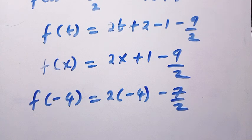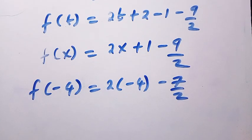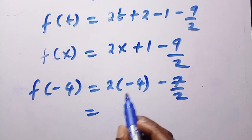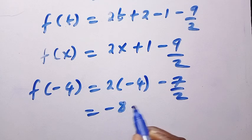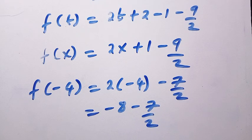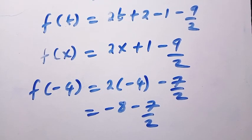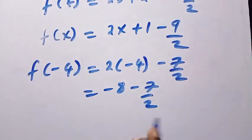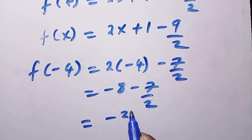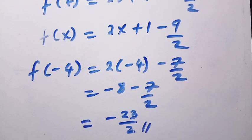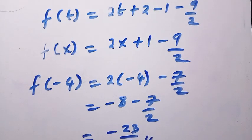We have minus 8 minus 7 over 2, and combining gives us minus 23 divided by 2. So the answer is the same, minus 23 over 2, just a different approach. Thanks for watching, and see you in the next video. Bye!